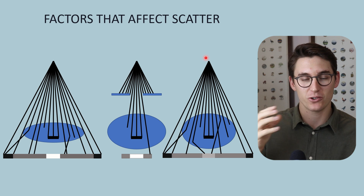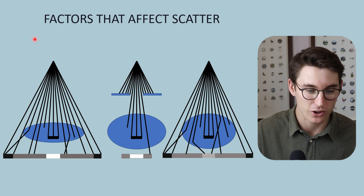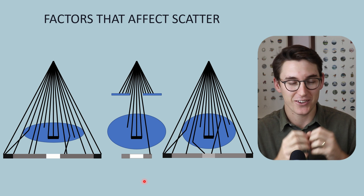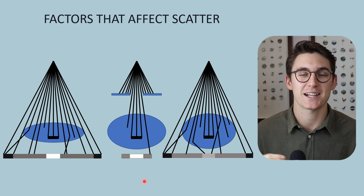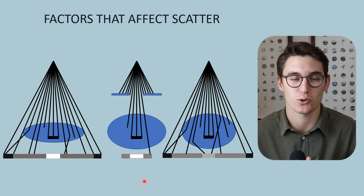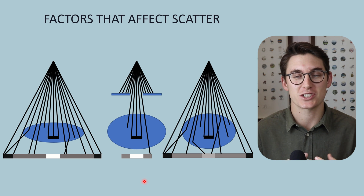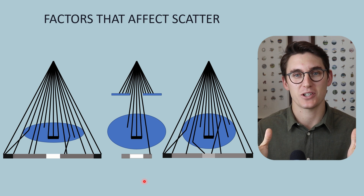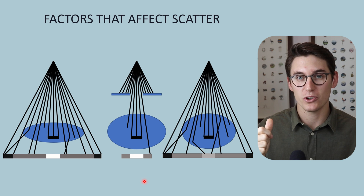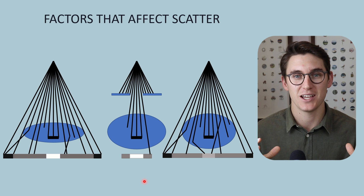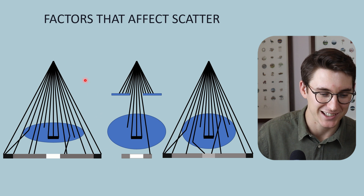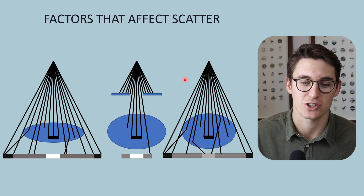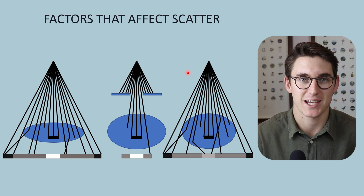There are four main factors that increase or decrease the amount of scatter in our image, and we're going to go through three of them today. The one we're not covering is tissue density: the denser a tissue, the more Compton scatter and the more scatter contribution to our image. There's nothing we as radiographers or radiologists can do to decrease tissue density — it's set and finite. The three factors we will cover are tissue thickness, field size, and x-ray energy.